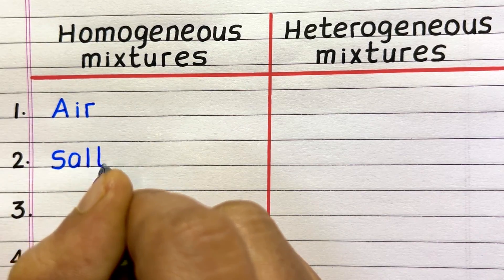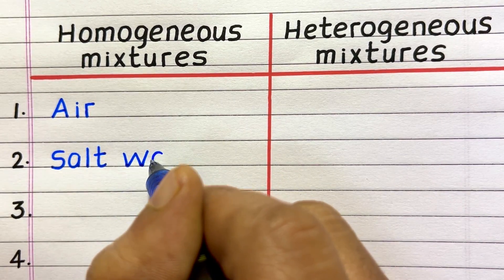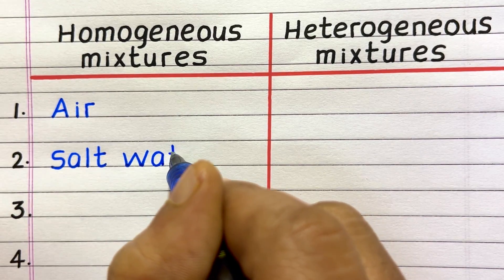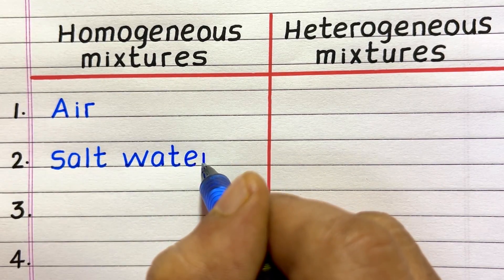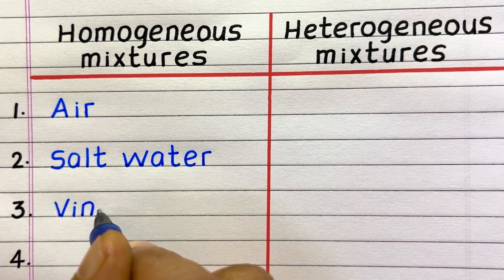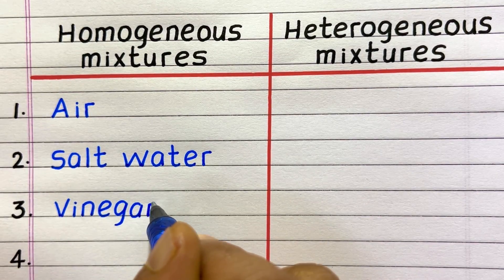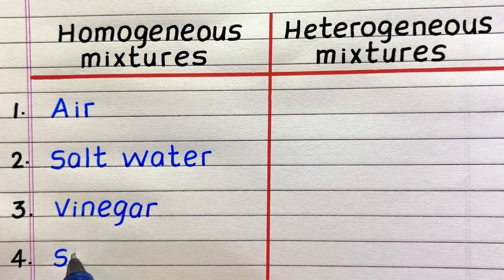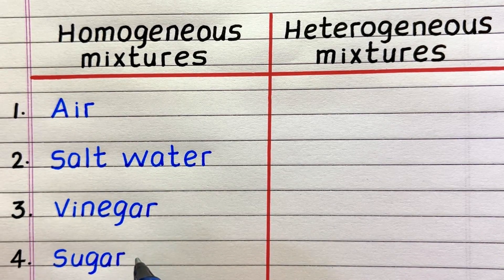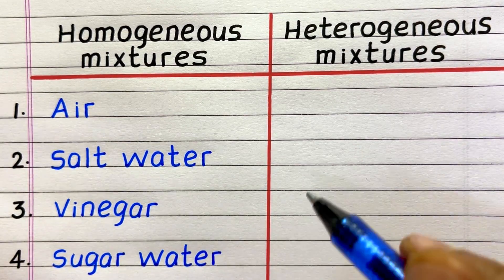First example of a homogeneous mixture is air. Second, salt water. Third, vinegar. Four, sugar water.